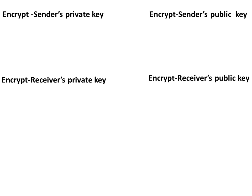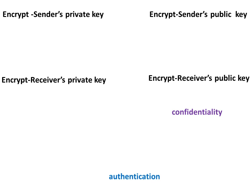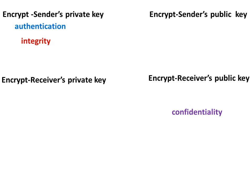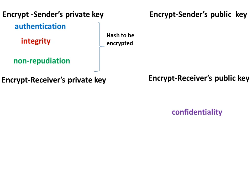Let us recap. For confidentiality, it goes to the receiver's public key. For authentication, the sender has something unique — the sender's private key. For integrity, again the sender's private key. For non-repudiation, again the sender's private key. Remember: for authentication, integrity, and non-repudiation, create a hash and encrypt the hash using the sender's private key. For confidentiality, encrypt the full message using the receiver's public key.